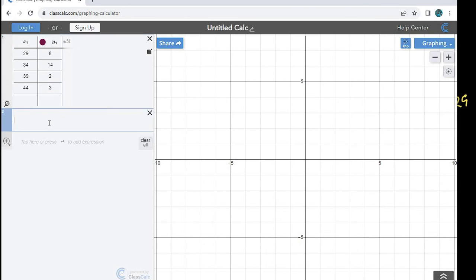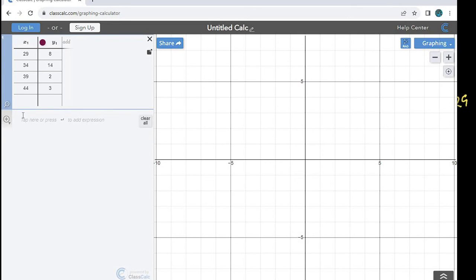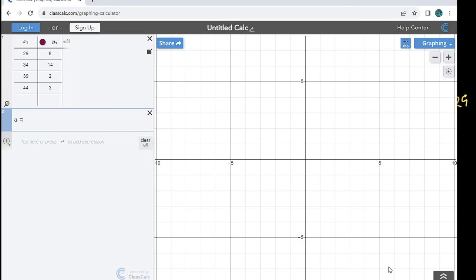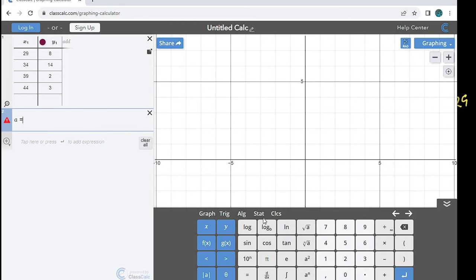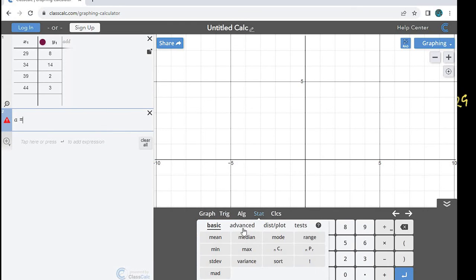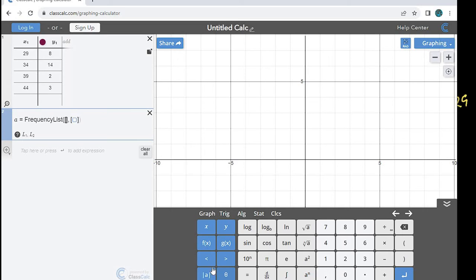And what I'm going to do is name a variable. So I'm just going to let my variable be A. It doesn't matter what you name it. I can either start typing frequency and then it will pull up the frequency list and ask you for your x1, y1. Or I could have just done A equals and come down here to the menu, go to stat and advanced, and click on the frequency list.